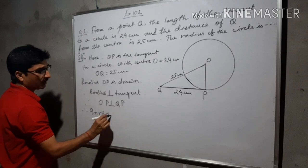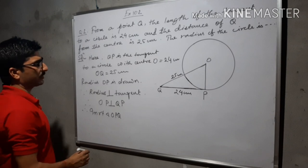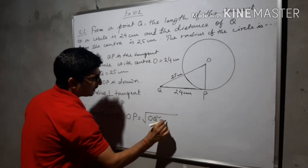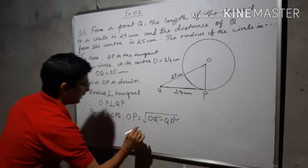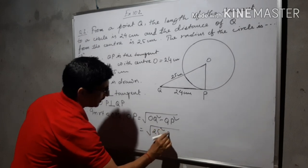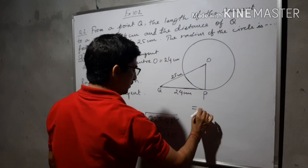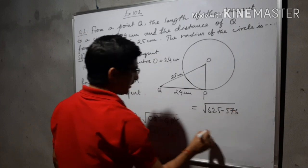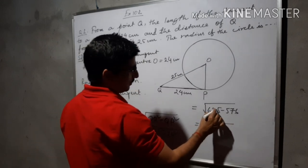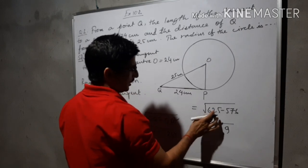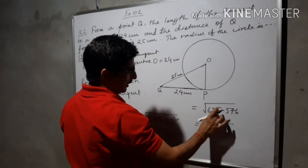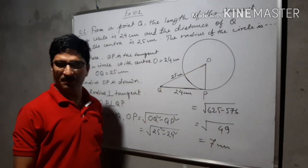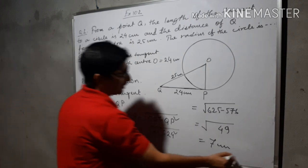In right triangle OPQ, OP is equal to the square root of OQ squared minus QP squared — that is equal to the square root of 25 squared minus 24 squared, which equals the square root of 625 minus 576, which is the square root of 49, equal to 7 cm. Therefore, the length of the radius is 7 cm.